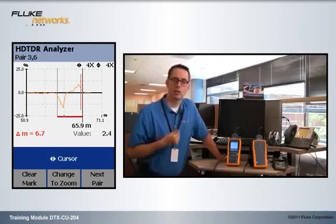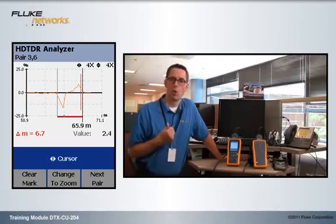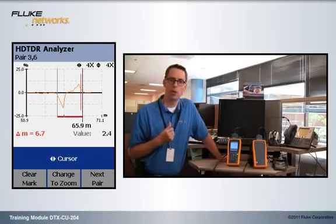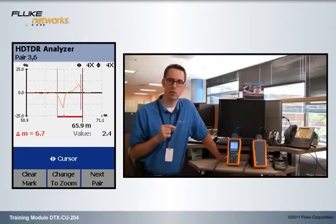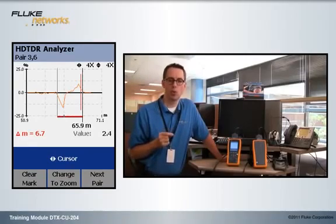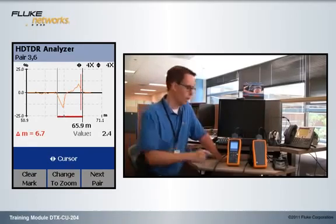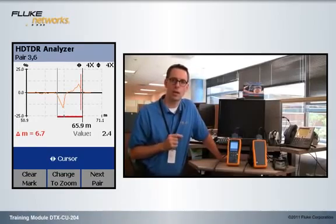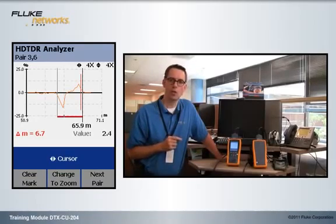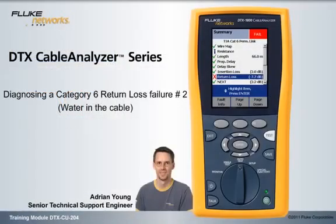So, let's just recap that. When you look at the return loss trace, if you see all four pairs following each other on the graph at the lower frequencies, you have water in the cable. When you look at the TDR, you're looking for significant events, and most of the time when you have water in the cable, a significant event is going to be anything over minus 5, minus 6, or plus 5, or plus 6%.